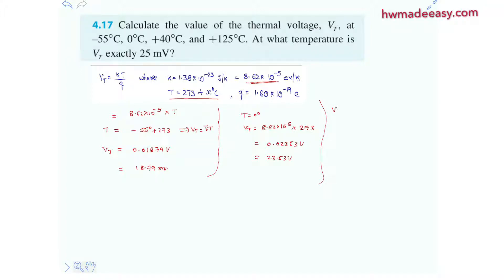At plus 40 degrees celsius, Vt thermal voltage is nothing but 8.62 times 10 to the power of minus 5 multiplied with 273 plus 40, which is clearly equals to, let's use a calculator, 0.0269 volt, 26.9 millivolt.